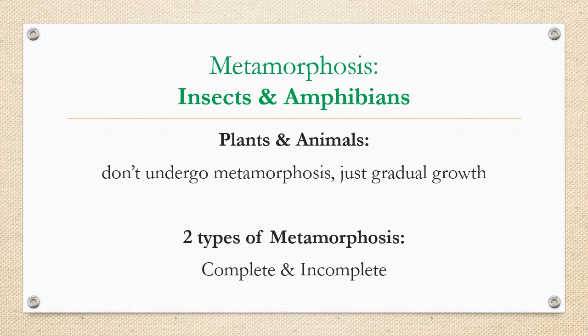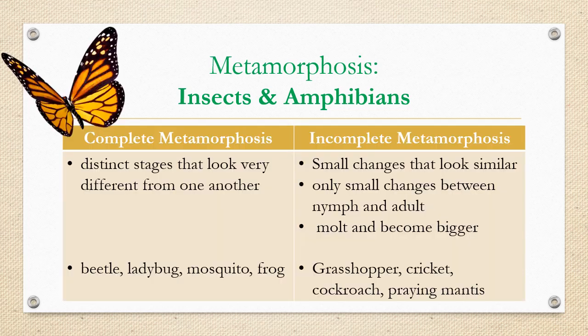Insects and amphibians — amphibians being like frogs — go through metamorphosis, but plants and animals don't. They just go through gradual stages of growth. When we're talking about insects and amphibians, we'll talk about two different types of metamorphosis: complete and incomplete. Complete metamorphosis is where there are really big changes.